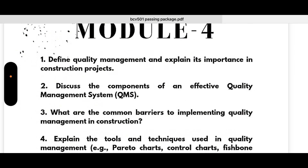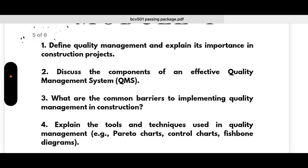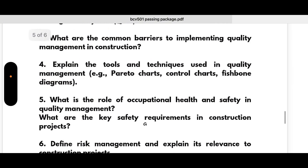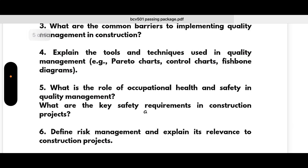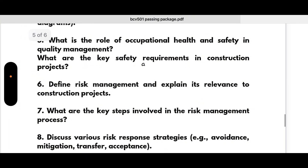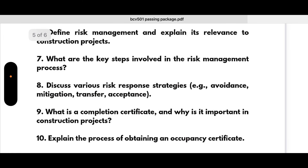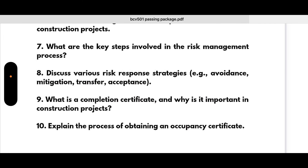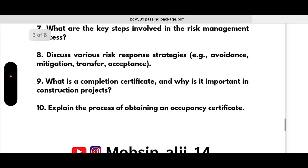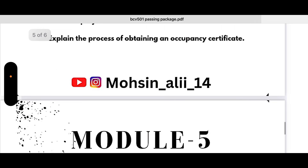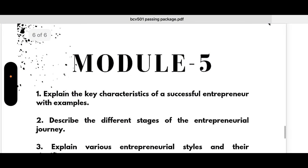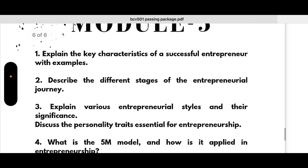Coming to Module 4: define quality management and explain its importance in construction projects; discuss the components of an effective quality management system (QMS); what are the common barriers to implementing quality management in construction; explain the tools and techniques used in quality management; what is the role of occupational health and safety in quality management; what are the key safety requirements in construction projects; define risk management and explain its relevance to construction projects; discuss the key steps in the risk management process; discuss various risk response strategies such as avoidance, mitigation, transfer, and acceptance; what is a completion certificate and why is it important; explain the process of obtaining an occupancy certificate.